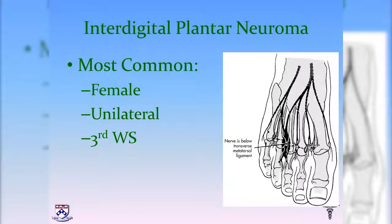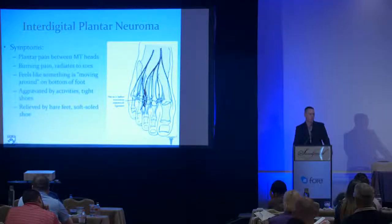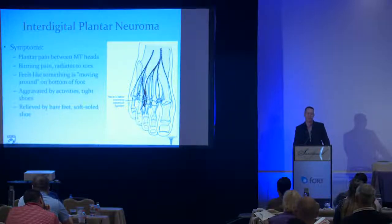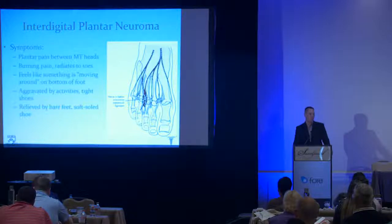Symptoms are plantar-sided — patients feel like they're walking on a pebble or stone in their shoe that they can't remove, sometimes with burning pain radiating into the toes or a sensation of something moving in the foot. Tight, pointy shoes worsen symptoms by compressing the metatarsals, mimicking Mulder's test. Higher heels load the forefoot and trap the nerve. Bare feet, soft-soled shoes, or open-toed sandals usually help.